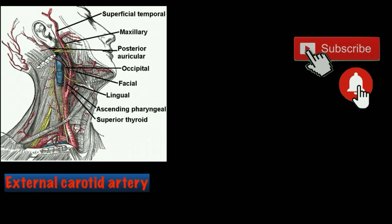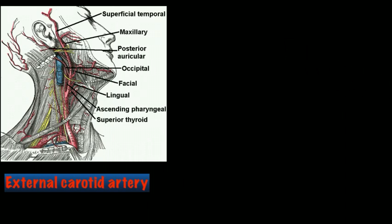The external carotid artery is a major artery of the head and neck. It arises from the common carotid artery when the common carotid artery divides into the external and the internal carotid artery. The external carotid artery is the main artery which supplies blood to the face and neck.